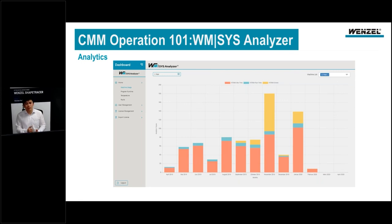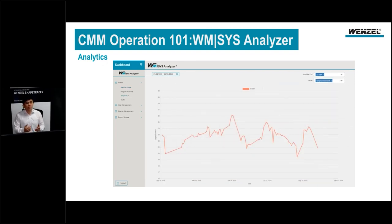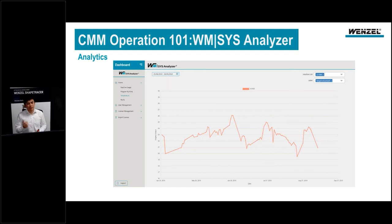When you want to compare machines to each other, you can add them to a machine list and optimize your workflow. You can do the same with workpiece and surrounding temperature — you can select one machine or add a second or third machine for comparison.